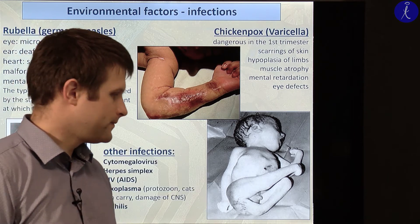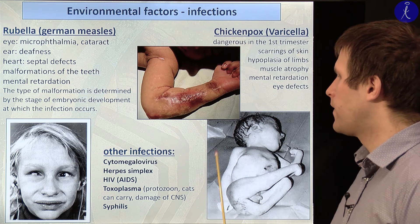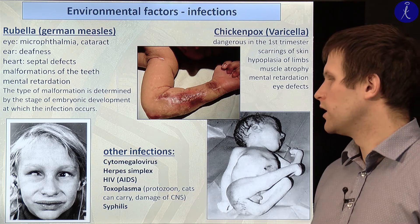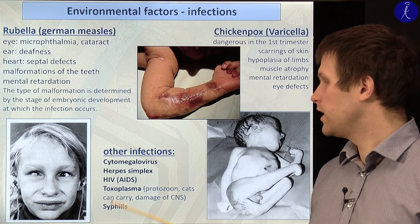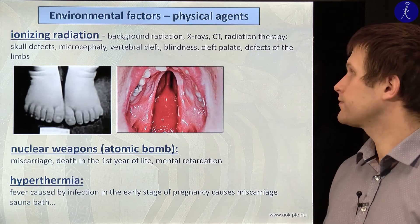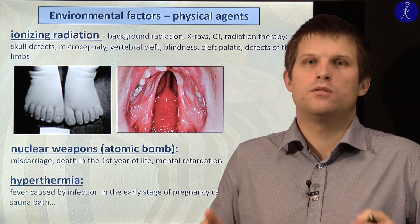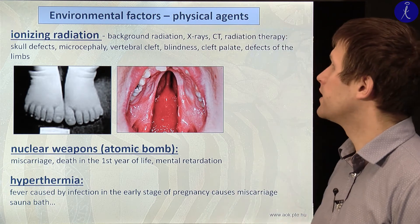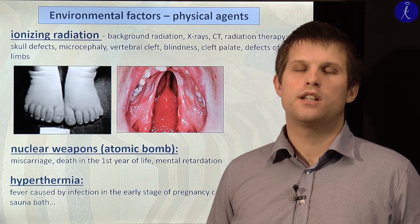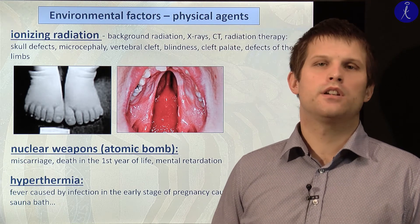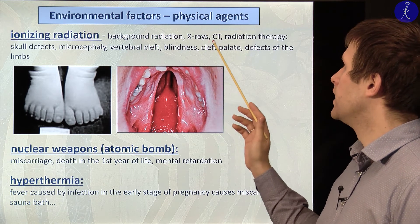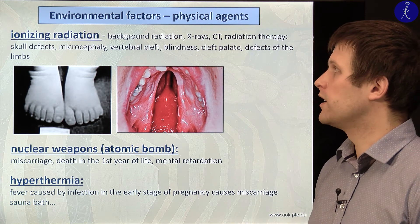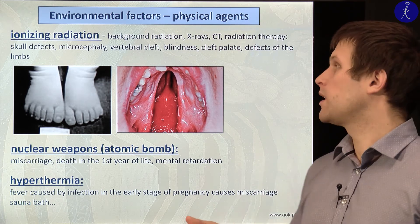Other infections causing malformations include cytomegalovirus, herpes simplex virus, HIV, toxoplasma gondii, and syphilis. Ionizing radiation is one of the most dangerous environmental factors. Background radiation does not normally disrupt development, but increased radiation such as X-rays, CT scans, or radiotherapy can increase ionizing radiation and lead to structural defects like vertebral cleft, cleft palate, or polydactyly. As doctors, we need to ask patients whether they are or could be pregnant before carrying out X-rays, CT, or radiotherapy.